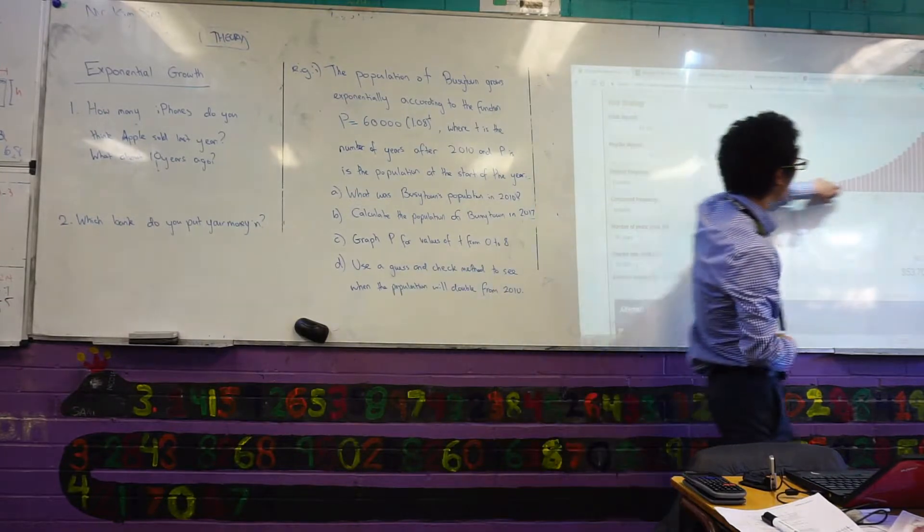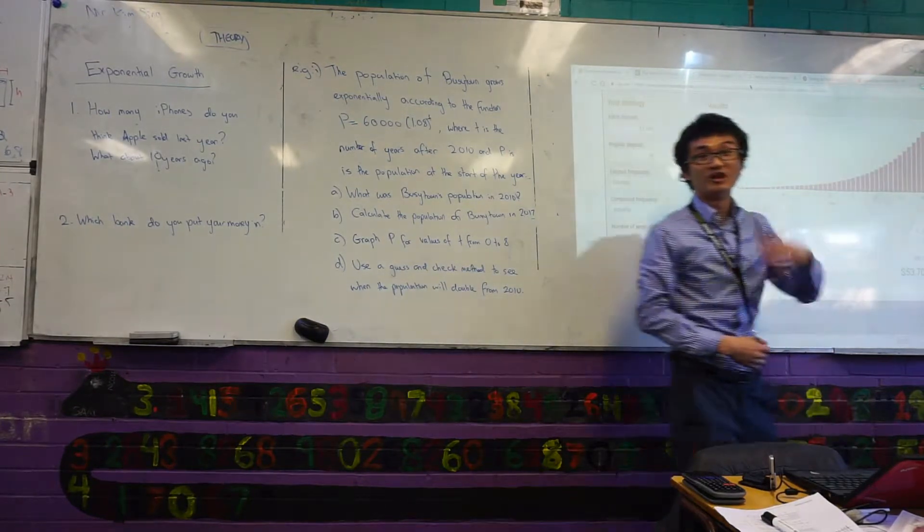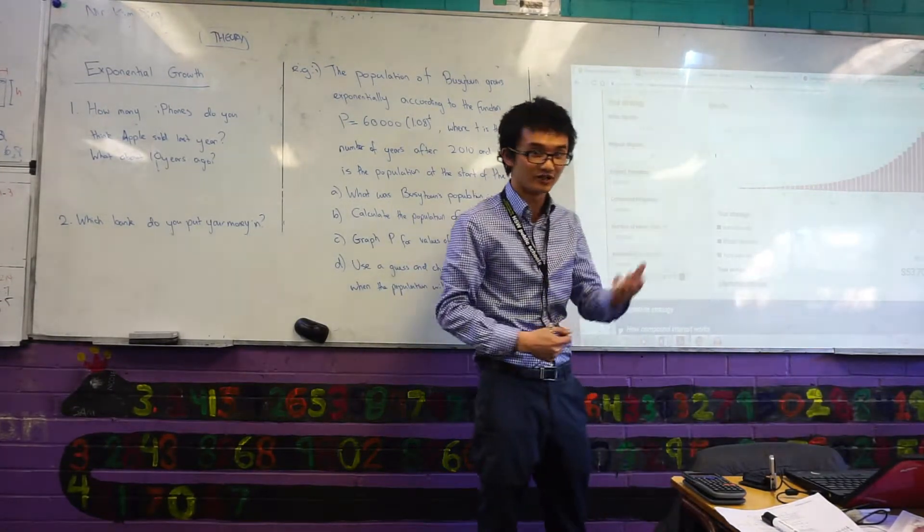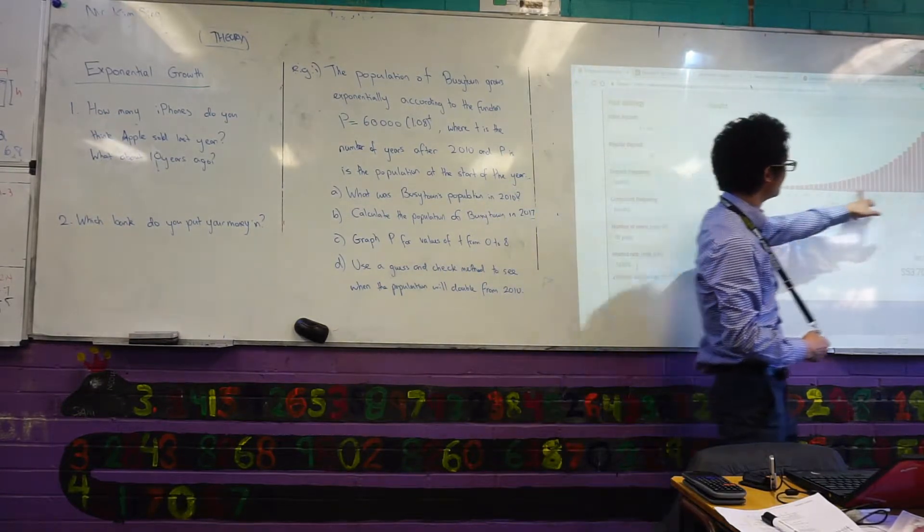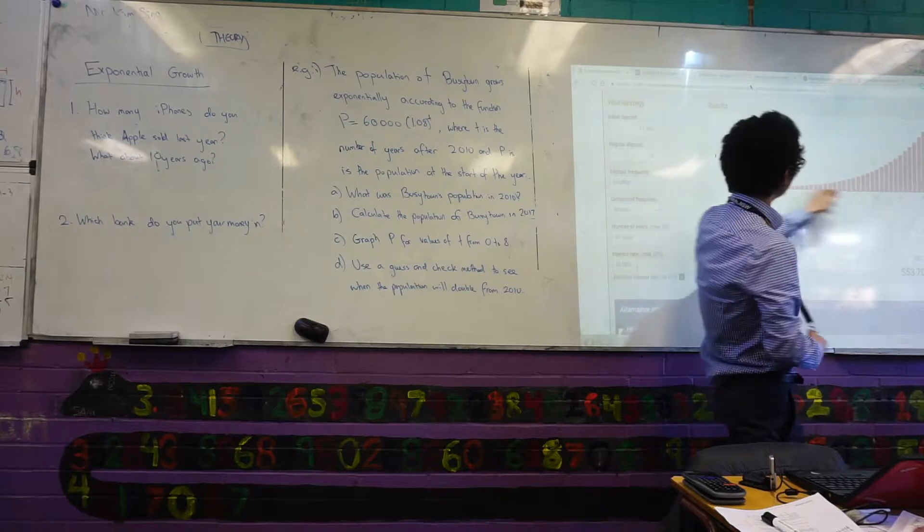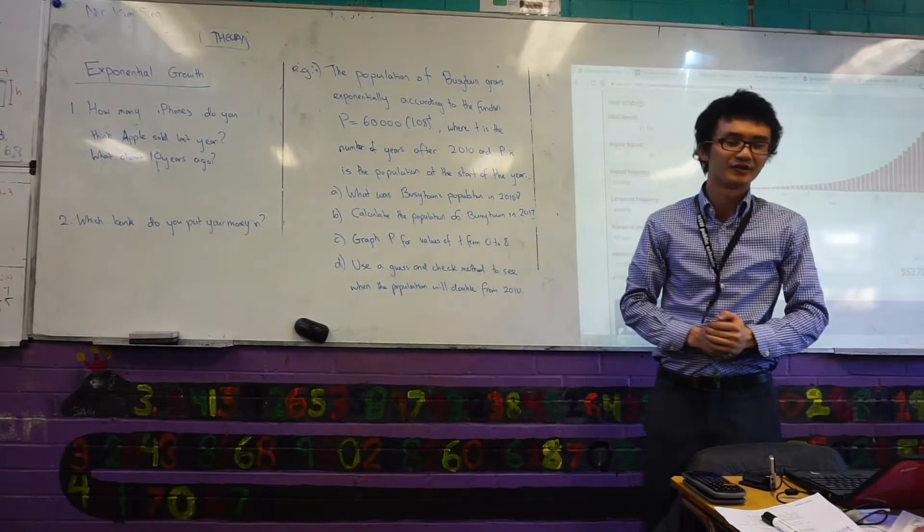We saw this kind of curve that was happening last lesson, we call it an exponential curve, okay? And that's because you can see, as the amount of years go on, the amount of money you're getting is a lot more than you'd expect.